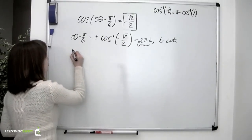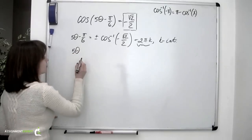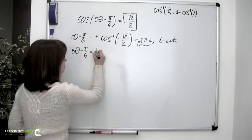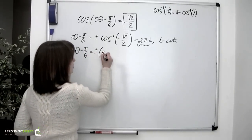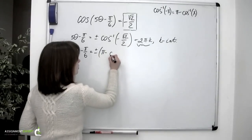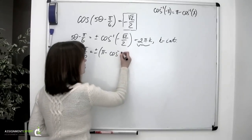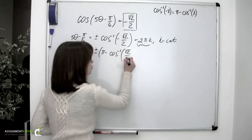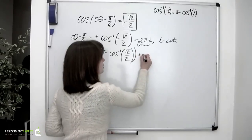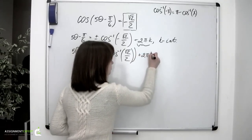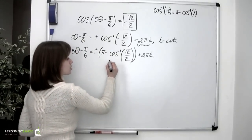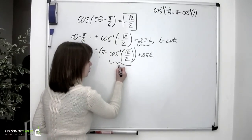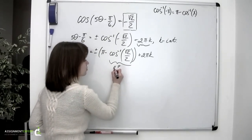And we'll have the following: 5 theta minus pi over 6 equals positive or negative pi minus inverse cosine of square root of 2 over 2, plus 2 pi k. We also know that the inverse cosine of square root of 2 over 2 equals pi over 4.